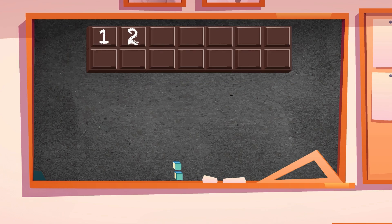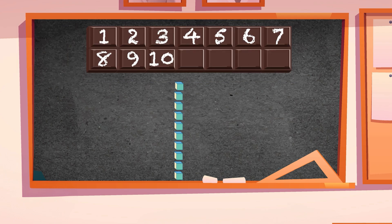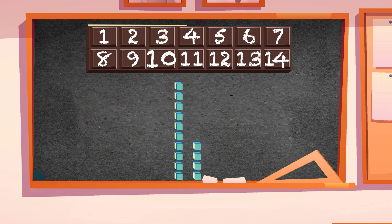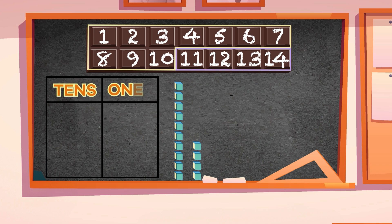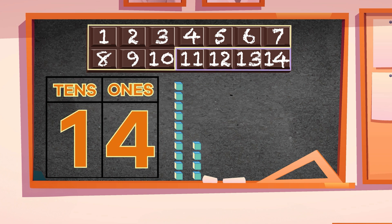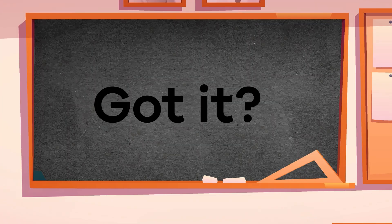Let's look at the number 14 as an example. As you can see, 14 is made up of one group of 10 and four ones. One 10 plus four ones equals 14.